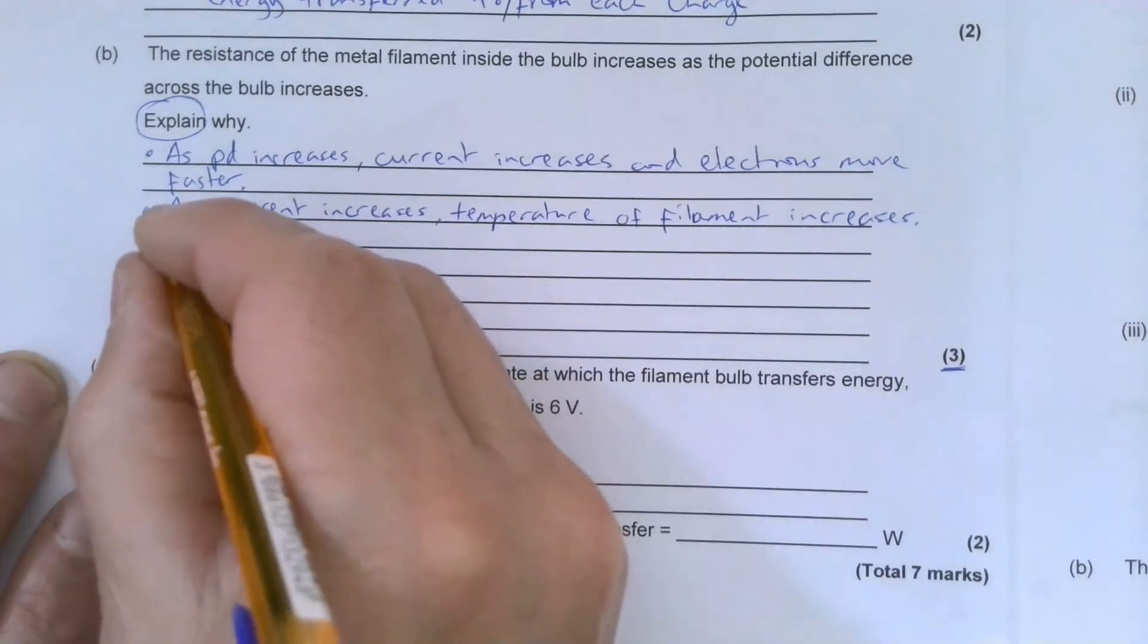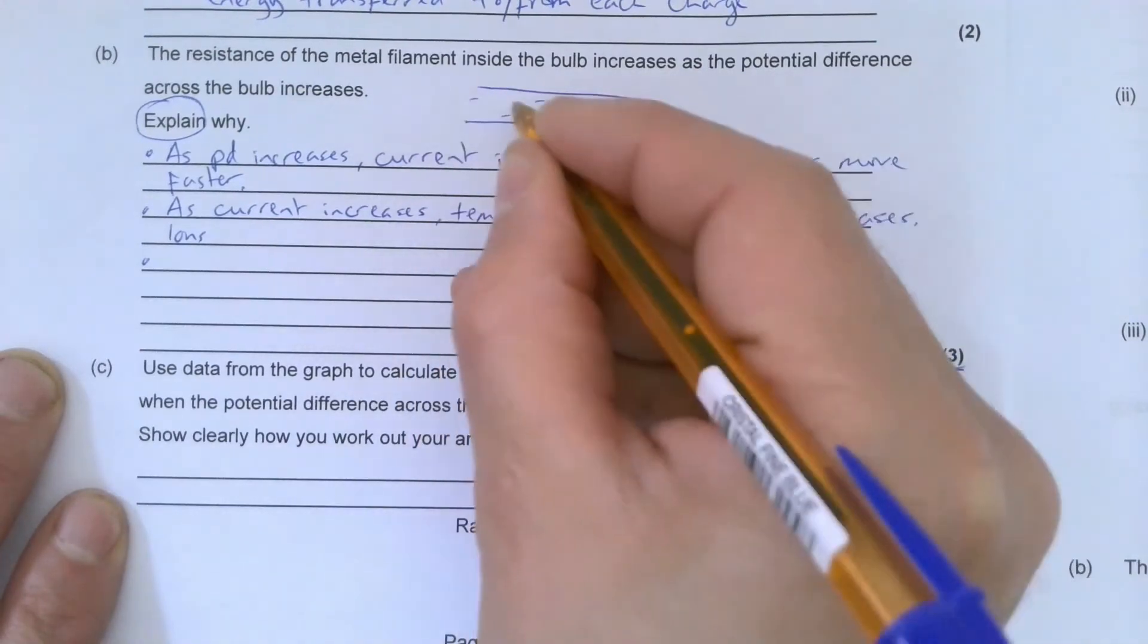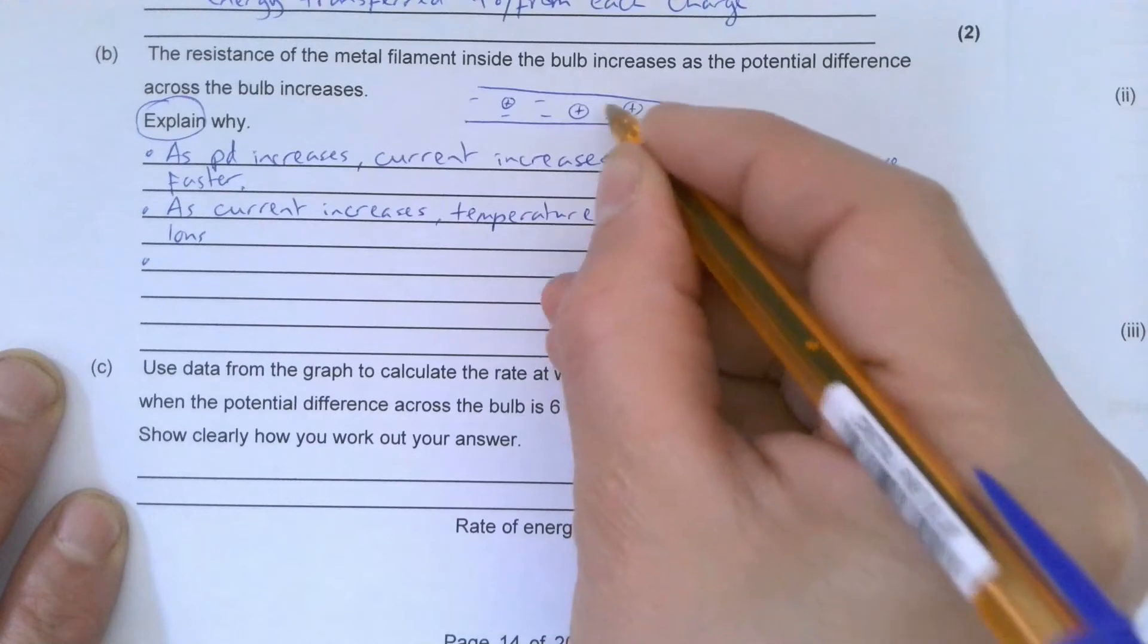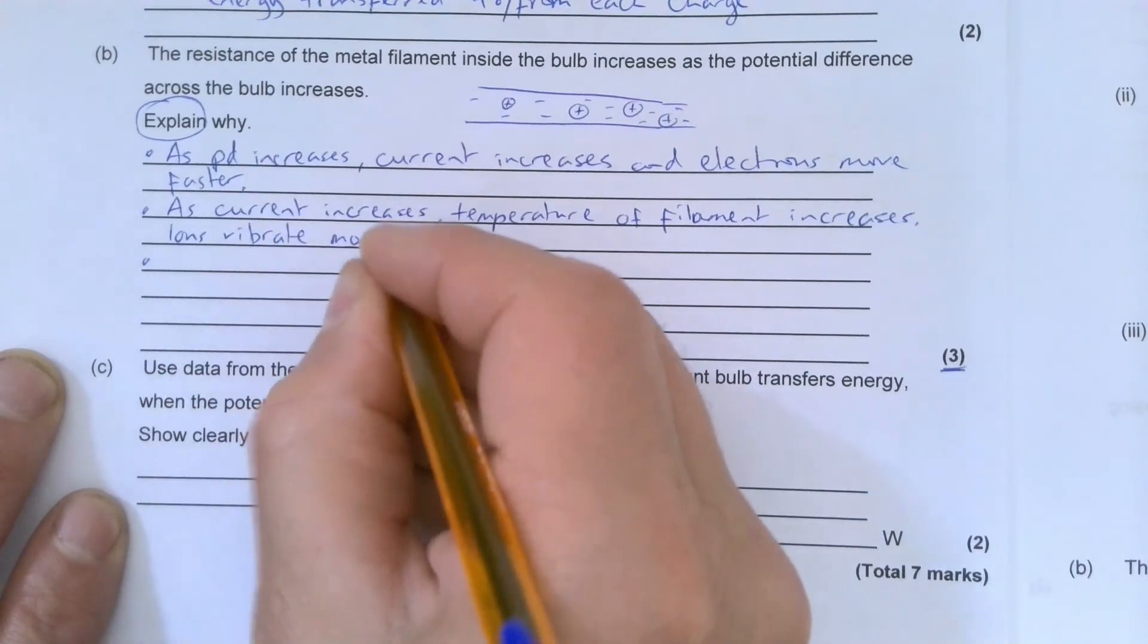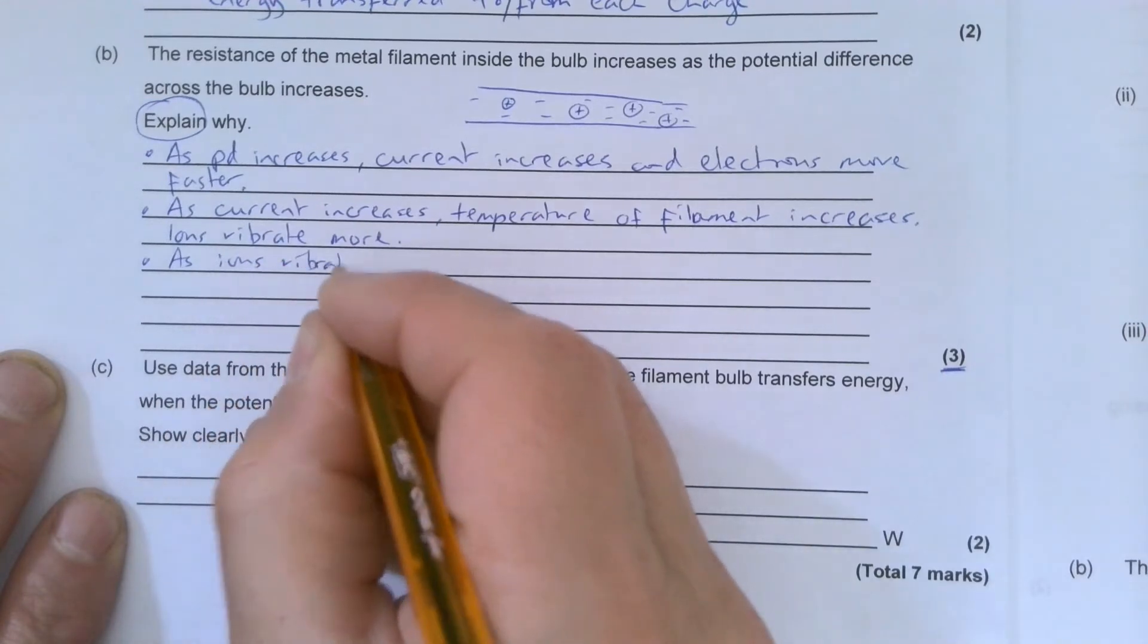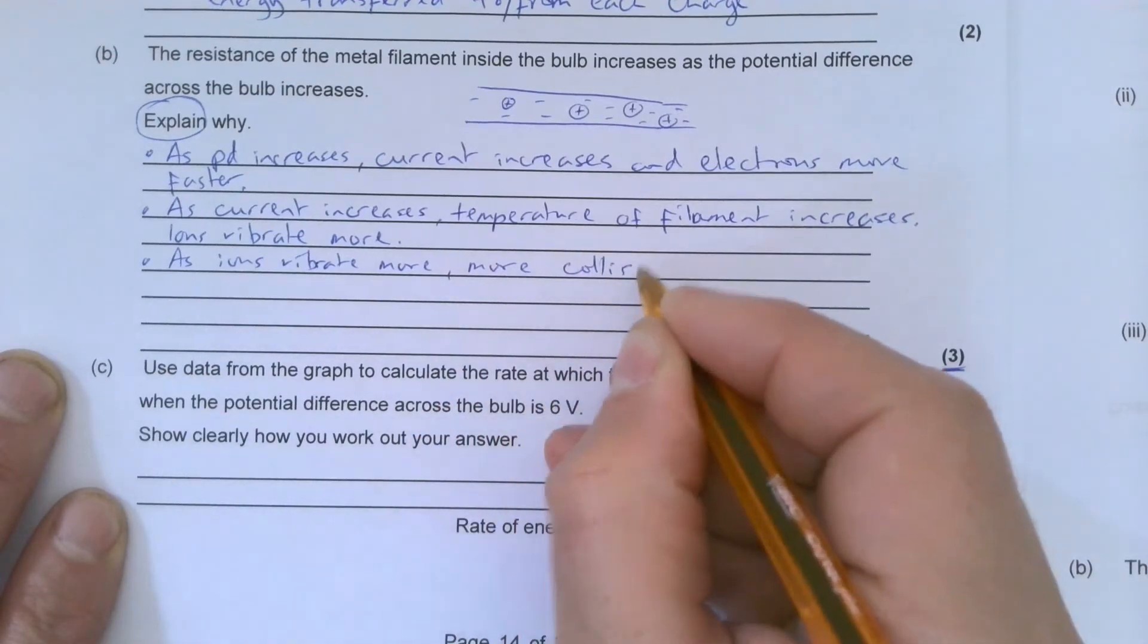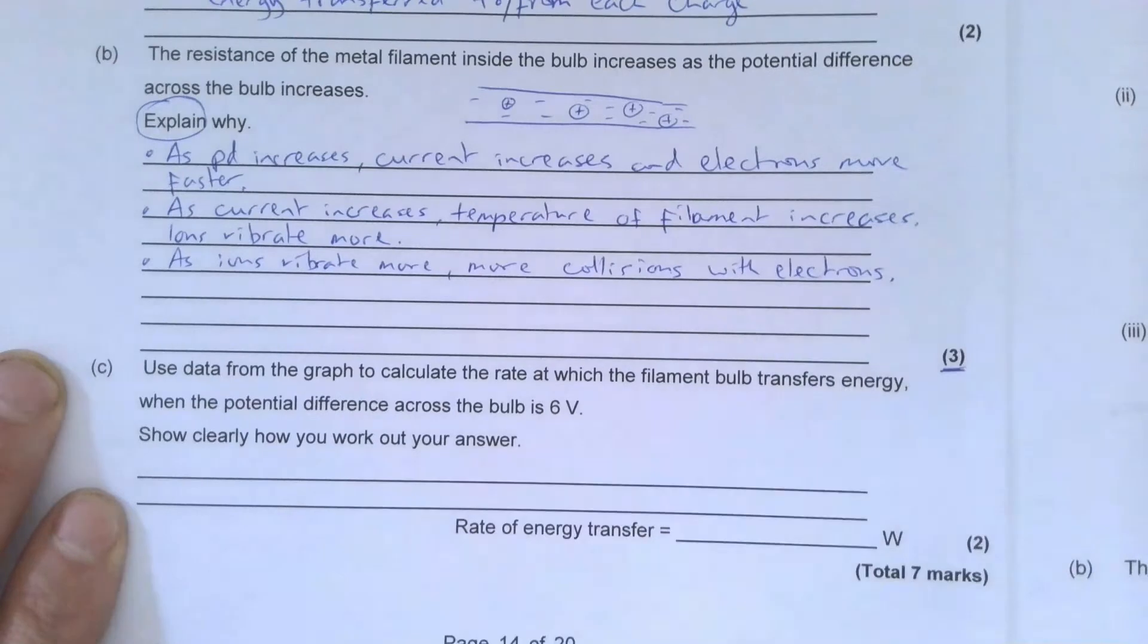This means that ions inside - so the positive ions, you remember inside the wire, you've got these free electrons dotted round all over the place, and you've got the positive ions, which is the nucleus and electrons of those metals - so they'll start vibrating. Ions vibrate more. As the ions vibrate more, there are more collisions with electrons, which means ultimately that the resistance increases.